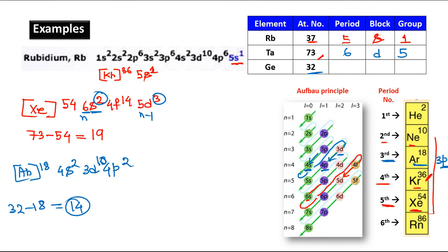For period: valence shell is 4, so period = 4. Block: last electron enters p, so block = p. For p-block, take the valence electrons in the nth shell and add 10. Valence electrons are 2 (from 4s) + 2 (from 4p) = 4, plus 10 gives group = 14.